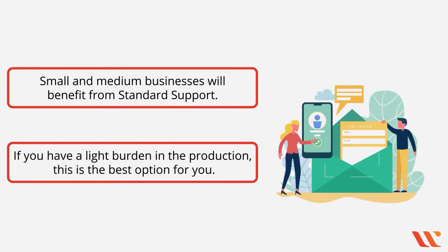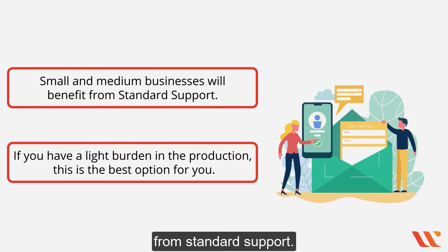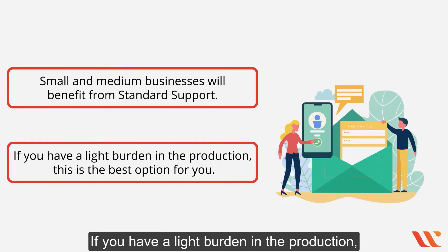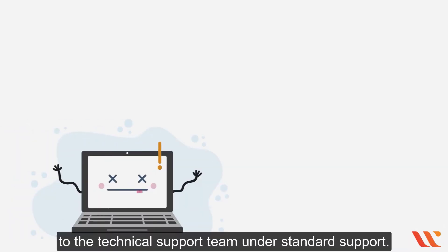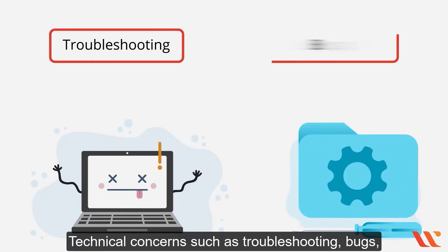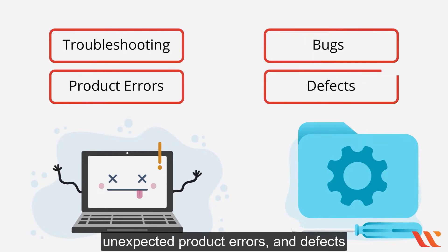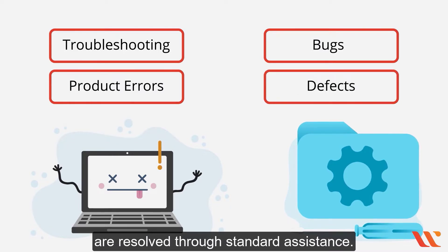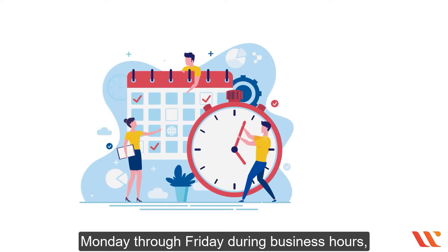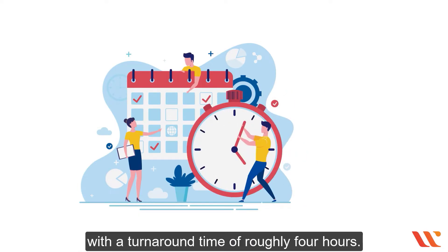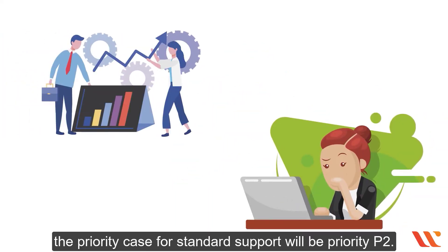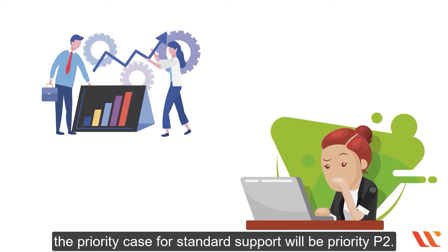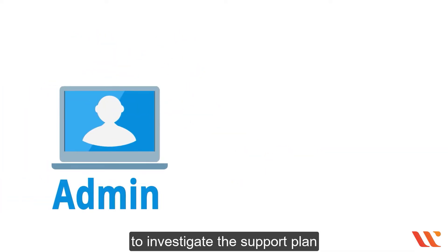Standard support is available for enrollment. Small and medium businesses will benefit from standard support if you have a light burden in production — this is the best option for you. You will have unrestricted access to the technical support team. Technical concerns such as troubleshooting bugs, unexpected product errors, and defects are resolved through standard support. It is available Monday through Friday during business hours with a turnaround time of roughly four hours for high-impact problems.